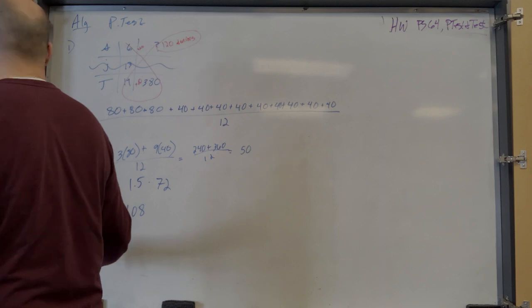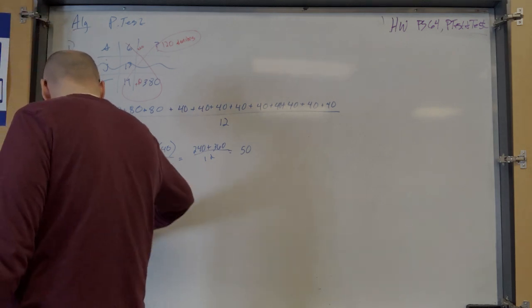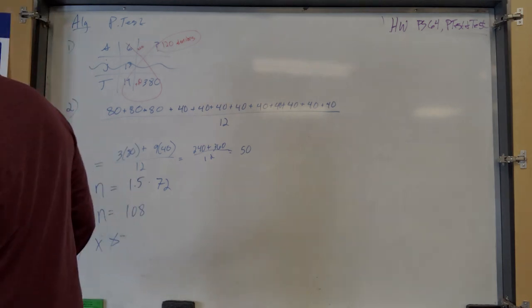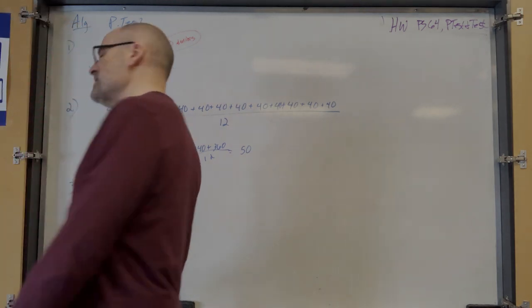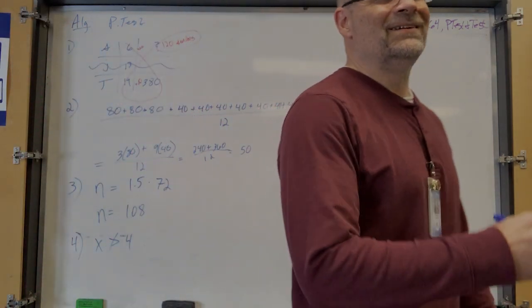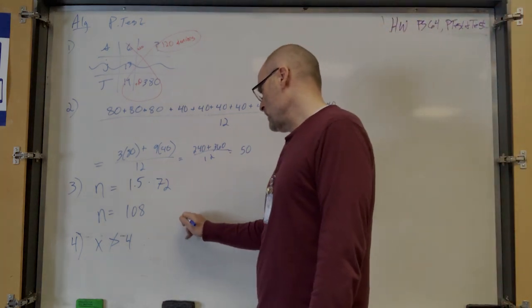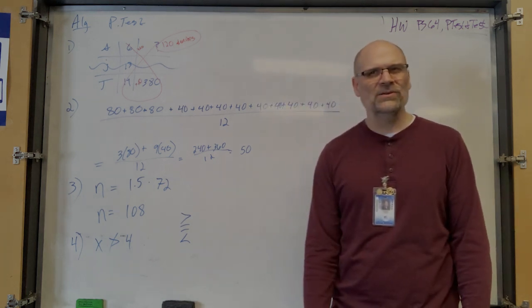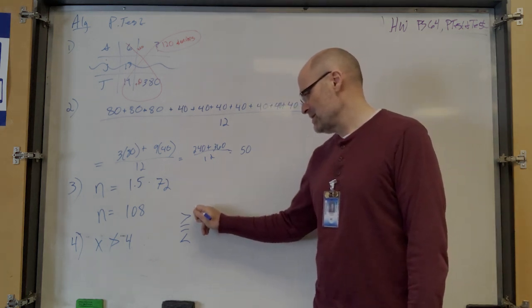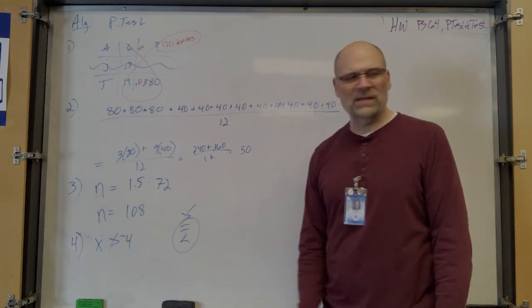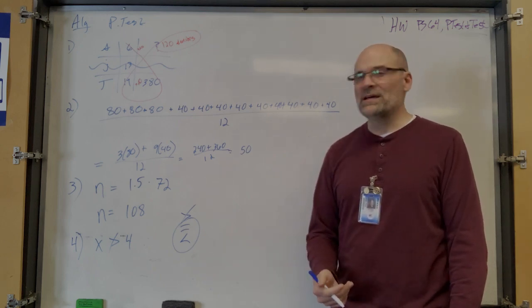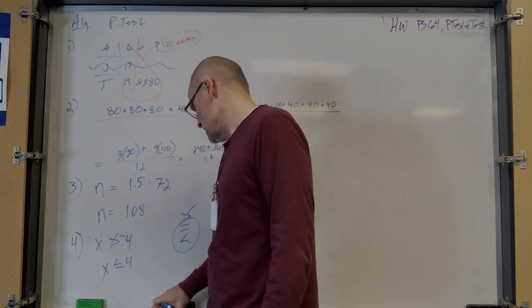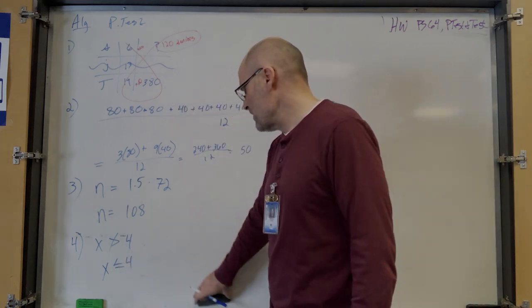Number four: first change this to a regular inequality, not a negated inequality. The symbol directly translates as 'x is not greater than 4.' So the only thing you're eliminating is 'greater than,' which means it could be equal to or less than. The symbol for that is less than or equal to 4.